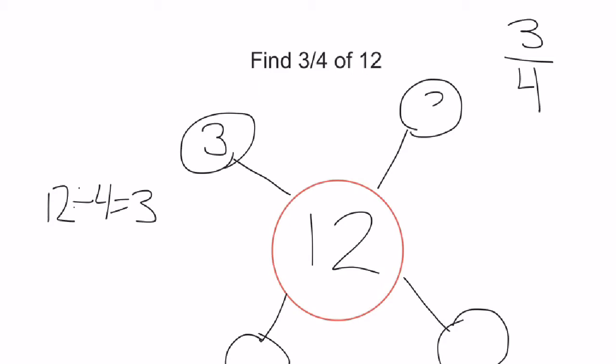I know that 12 divided by 4 equals 3. And we know that when we divide, it has to be an equal value each time. So now we know that 1 fourth is worth 3.